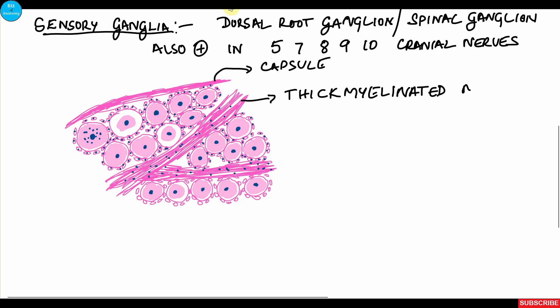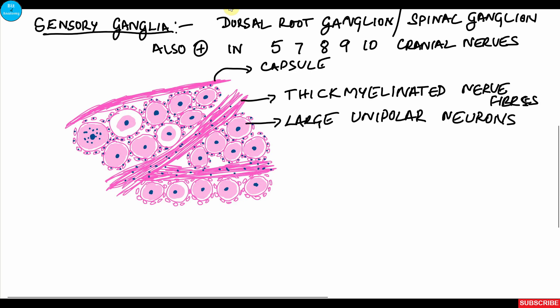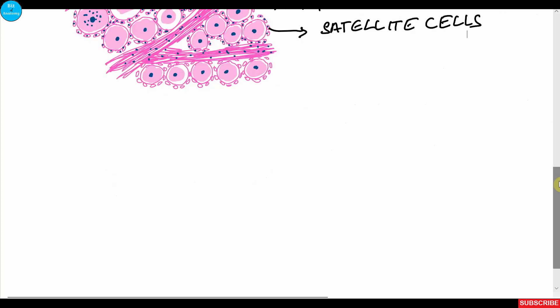To summarize the features of sensory ganglia: a connective tissue capsule, thick myelinated nerve fibers, and large unipolar neurons surrounded by numerous satellite cells.